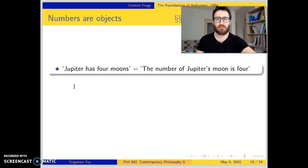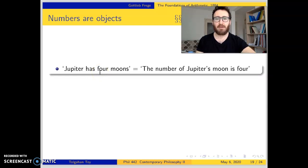The source of the problem is hidden in the form of this expression. In expressions like 'Jupiter has 4 moons,' 'Venus has 0 moons,' 'France has 1 president,' numbers are treated as if they are properties of concepts. A property of a concept is not enough to identify them. But for Frege, numbers are self-subsistent objects.